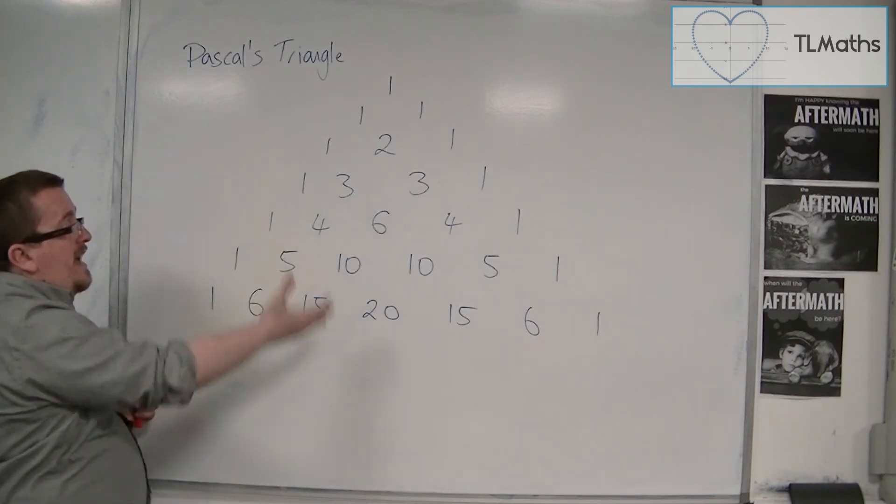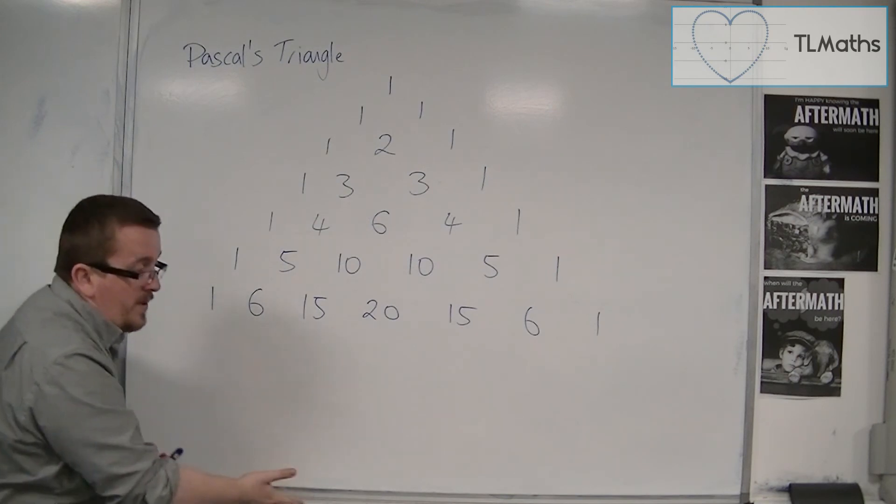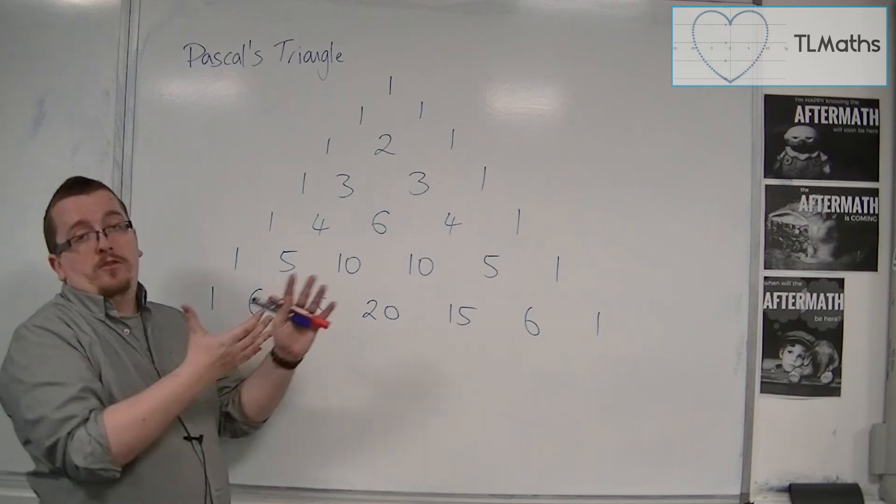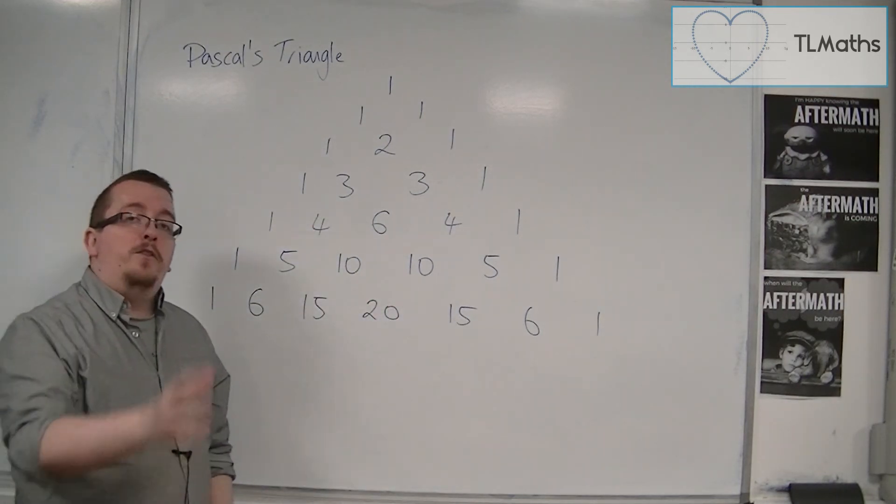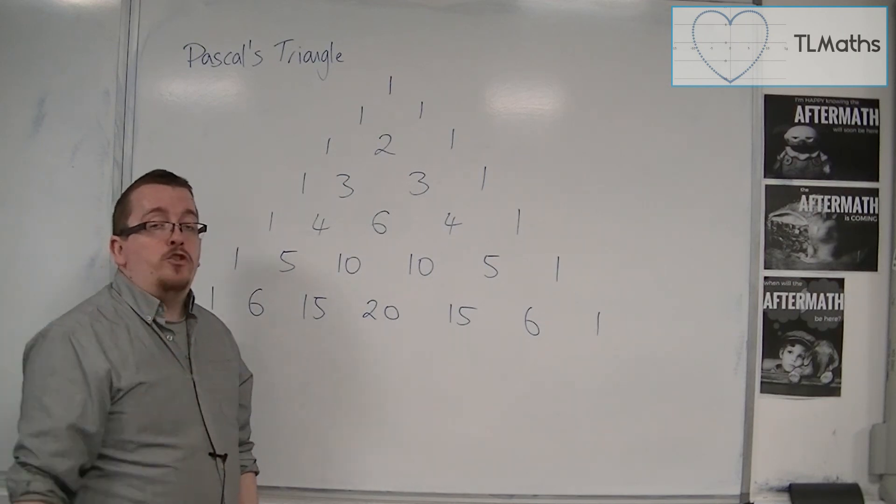So it doesn't take too long to get down to this many rows, for example. It wouldn't take too long to do another couple if you need to. If you needed to go much further than that, then the Pascal's triangle does get unmanageable, and I'm going to show you a way around that later in this section in the coming videos.